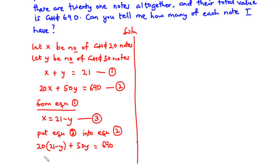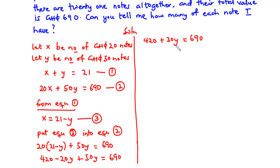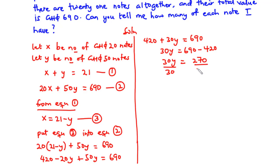Now let's multiply across. We have 20 times 21, which is 420, then 20 times negative Y is negative 20Y, plus 50Y equals 690. So 420 plus 30Y equals 690. We transpose 420 to the right-hand side: 30Y equals 690 minus 420, which gives 30Y equals 270. Dividing through by 30, we get Y equals 9.